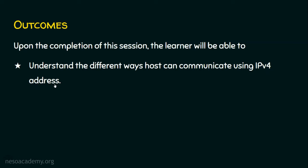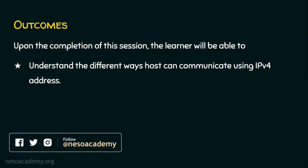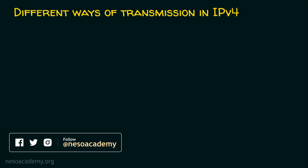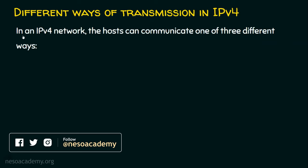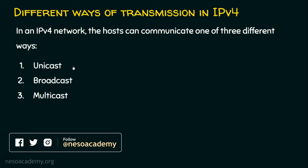Let's start with the different ways that a host can communicate using IPv4 address. There are basically three different ways in an IPv4 network. The host can communicate using one of three different ways: unicast, broadcast, and multicast.